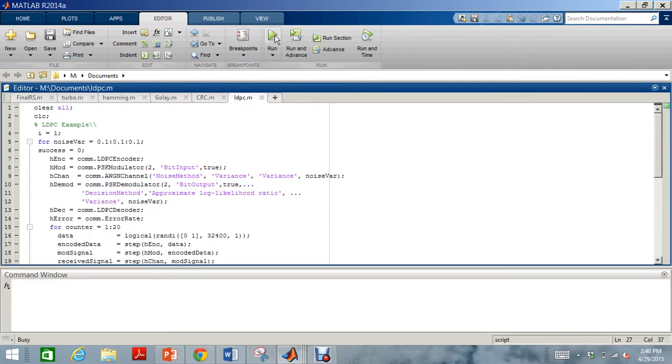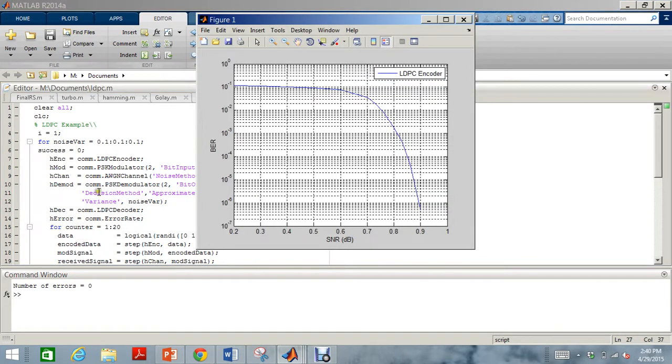Now the LDPC also takes a little more time to compute than the other codes as it is a little more complex. The number of errors was 0. It identified the errors and rectified them and this is the SNR versus BER graph.